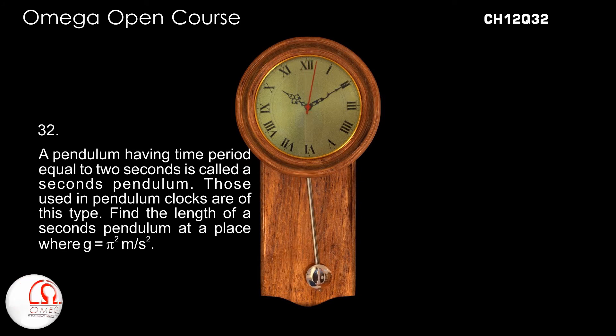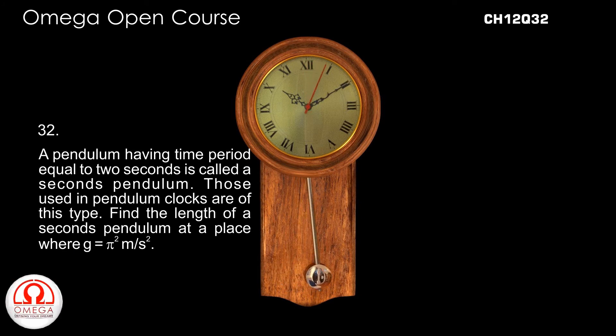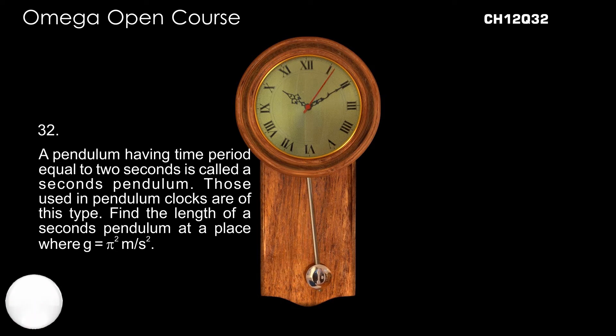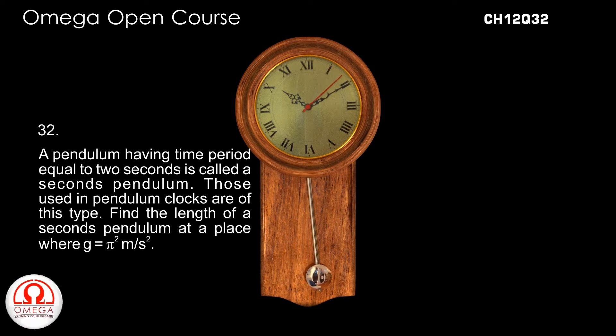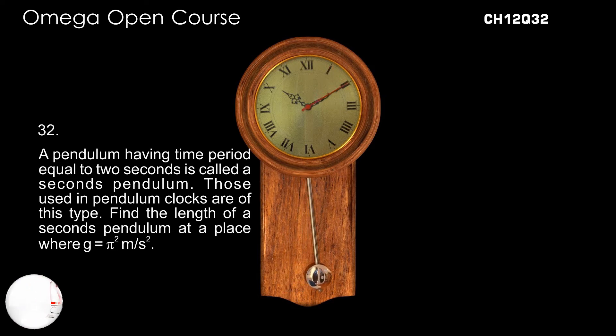A pendulum having time period equal to 2 seconds is called a seconds pendulum. Find the length of a seconds pendulum at a place where g is equal to pi square meter per second square.